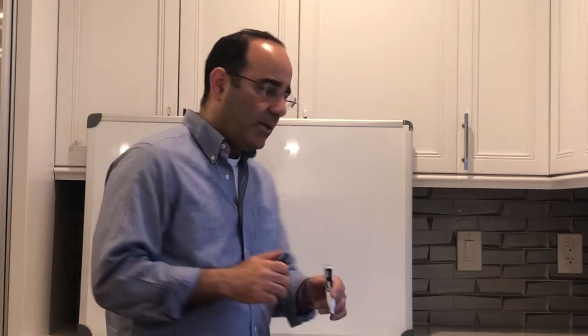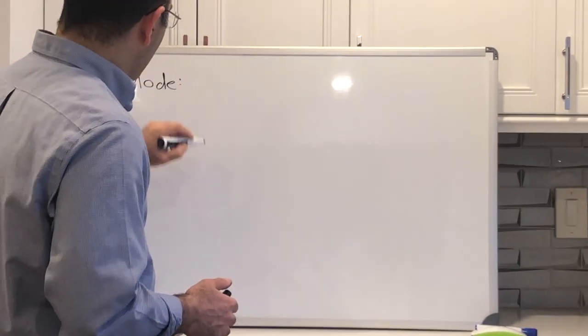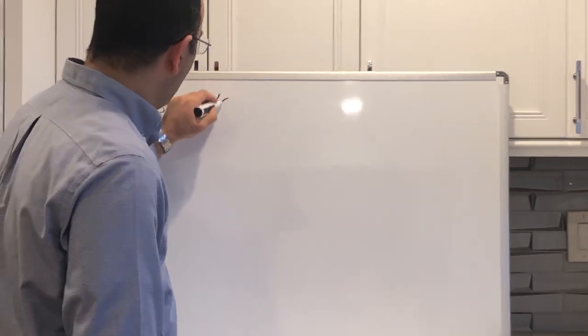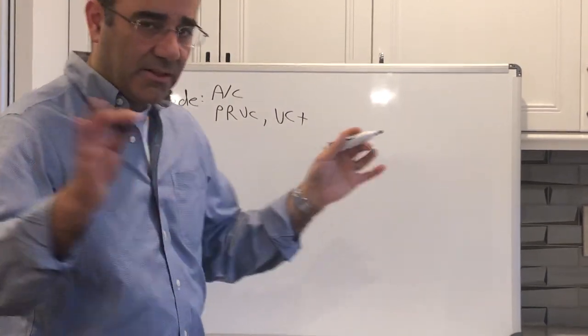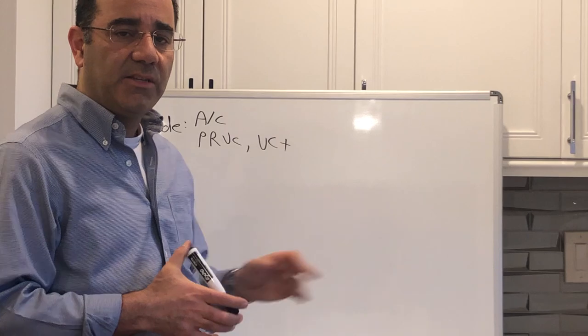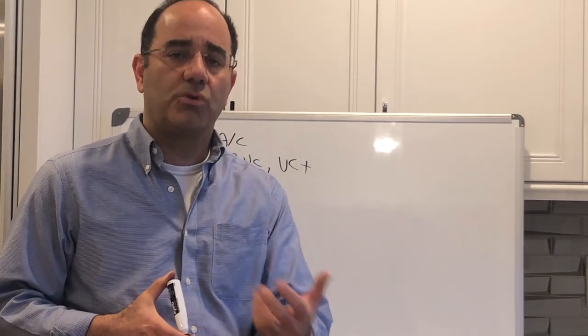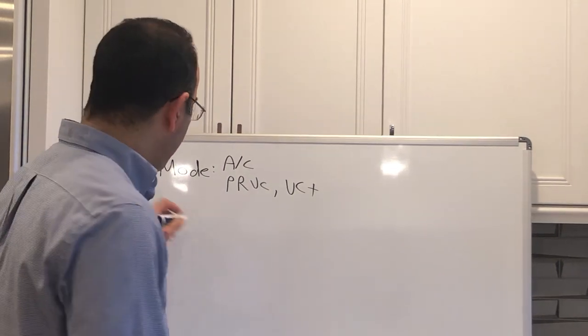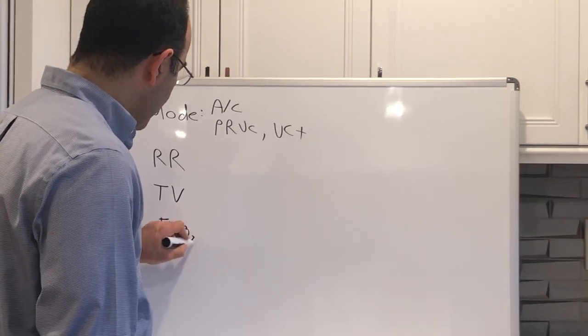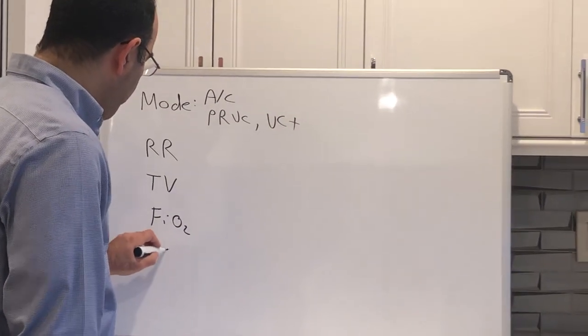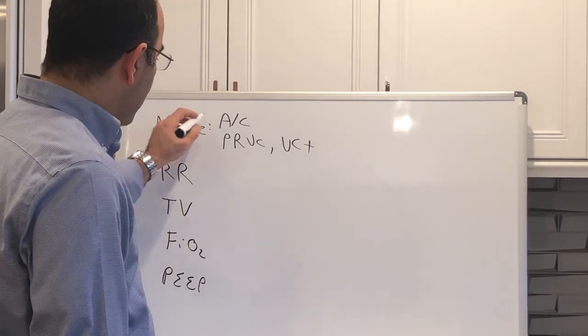Within volume control mode, one of the first variables that you need to prescribe is the specific mode of ventilation. For our purposes we're going to talk about assist control. Some ventilators may call that PRVC, some ventilators may call that VC plus. At the end of the day, what this means is you and I control the tidal volume being administered. The next variable that needs to be programmed is the respiratory rate, followed by the tidal volume, followed by the FiO2 or the amount of oxygen, and lastly the PEEP, the positive end expiratory pressure.